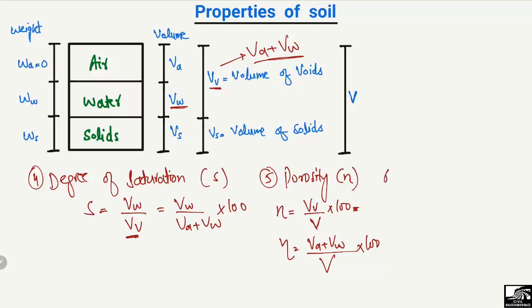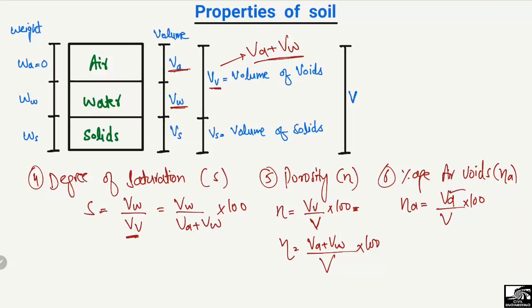The last property is the percentage air voids, represented by Na. The percentage air voids is equal to the volume of air divided by the total volume, multiplied by 100 because it is expressed in percentage. The volume of air is Va, and the total volume of the soil sample is the combination of volume of air, volume of water, and volume of solids.